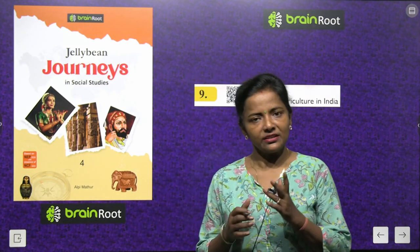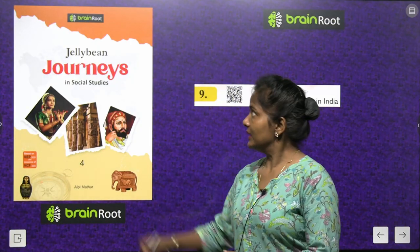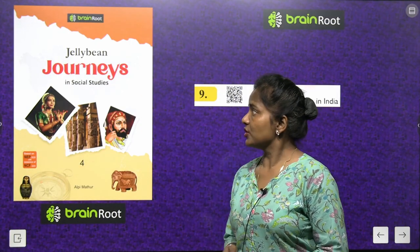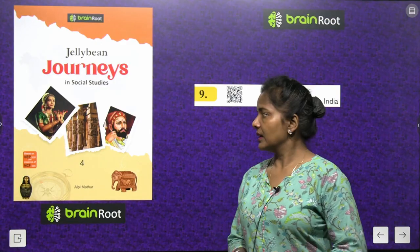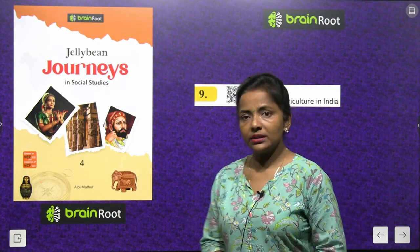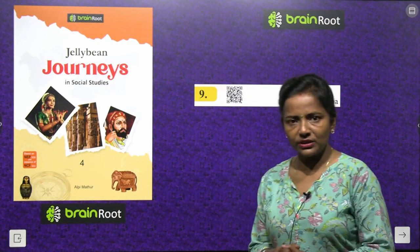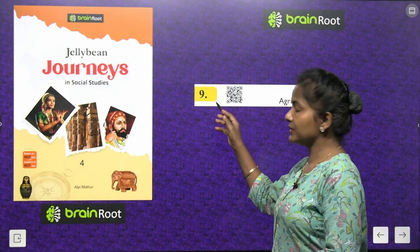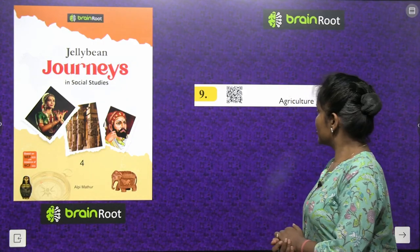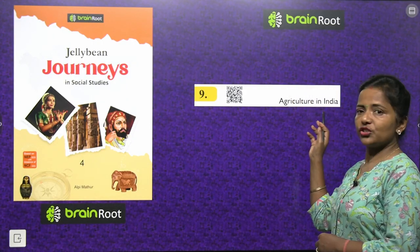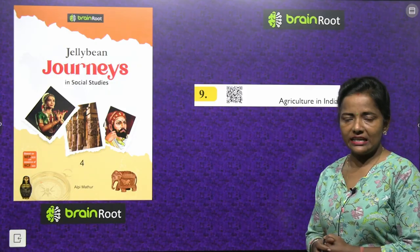A very warm welcome dear learners to your social studies class with your mentor Aparajita. Here we are with the book Jelly Bean Journeys in Social Studies Class 4th by Brain Root Series, and today we'll start with Chapter 9: Agriculture in India.